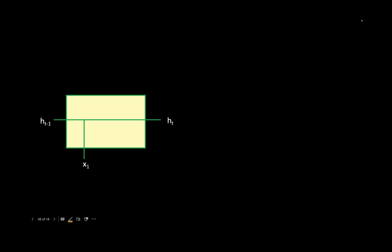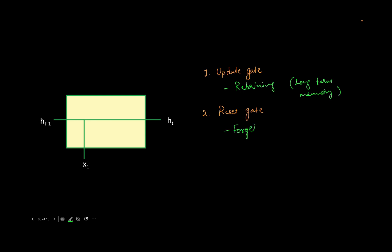The way GRU works is that it uses the concept of gates. It has two gates: one is called the update gate and the other is called the reset gate. The update gate helps with retaining some information for a long period of time, and is thus responsible for long-term memory in this unit. The reset gate is responsible for forgetting some information, giving more room for new information to come in. They are called gates because they basically allow some information to pass through while restricting other information.